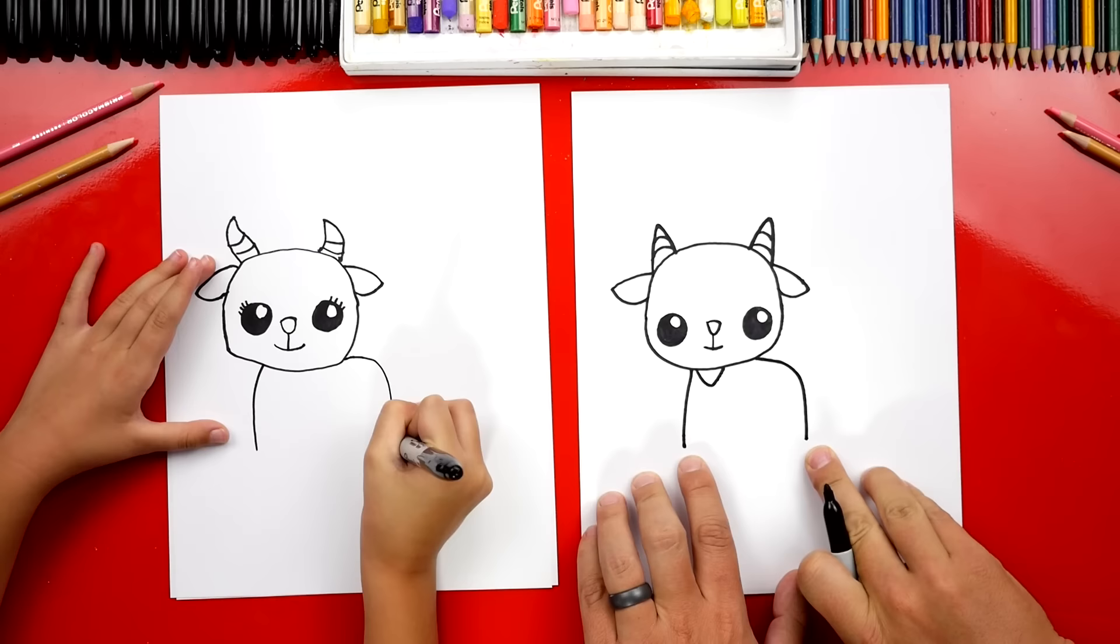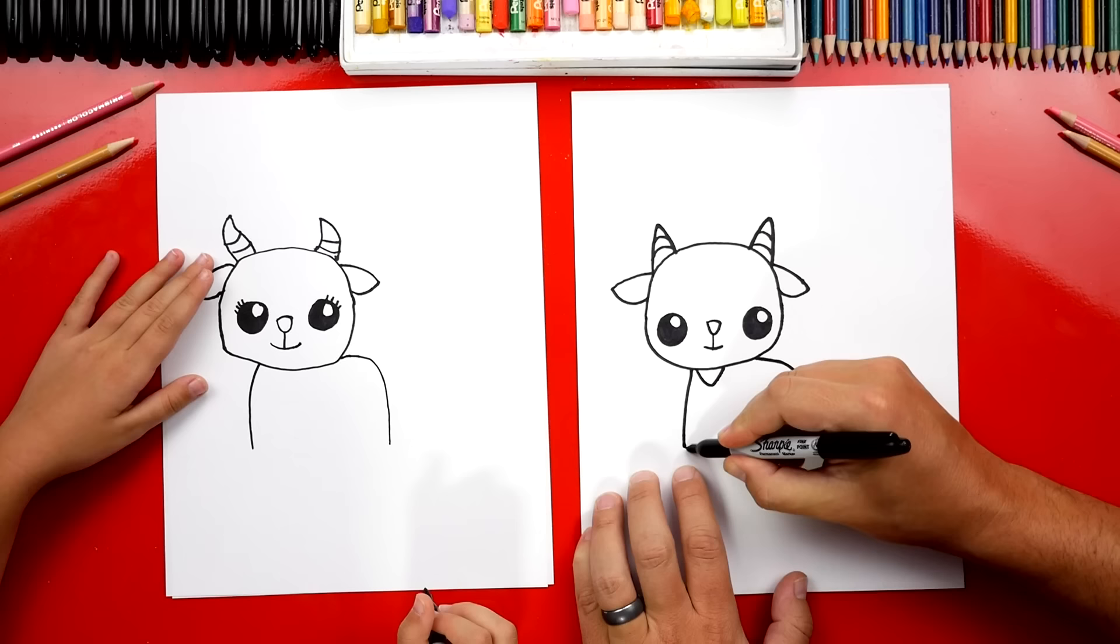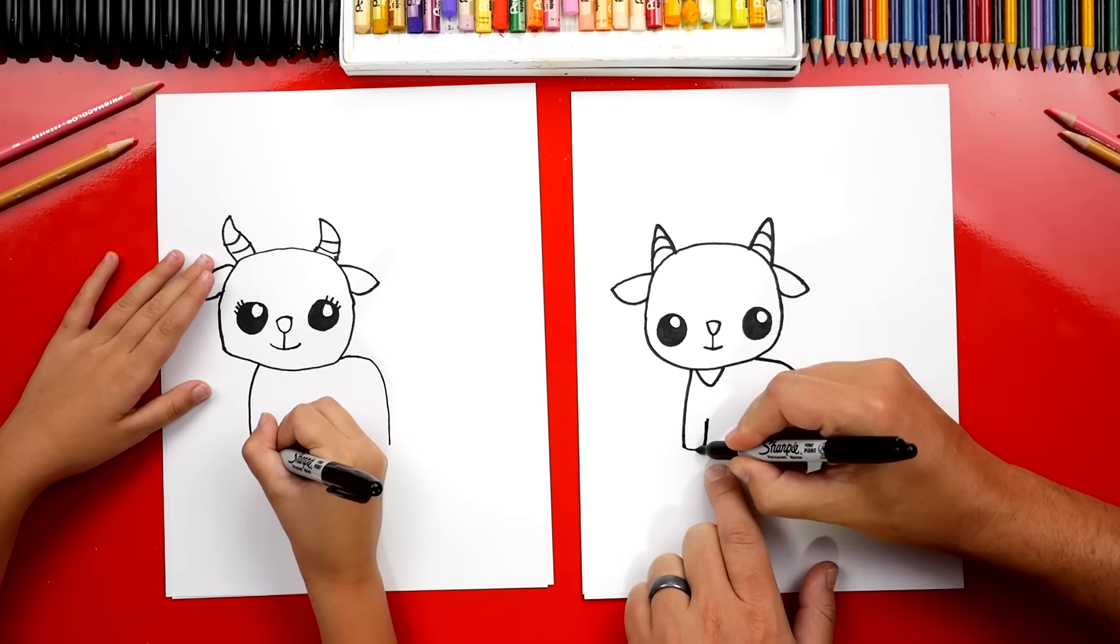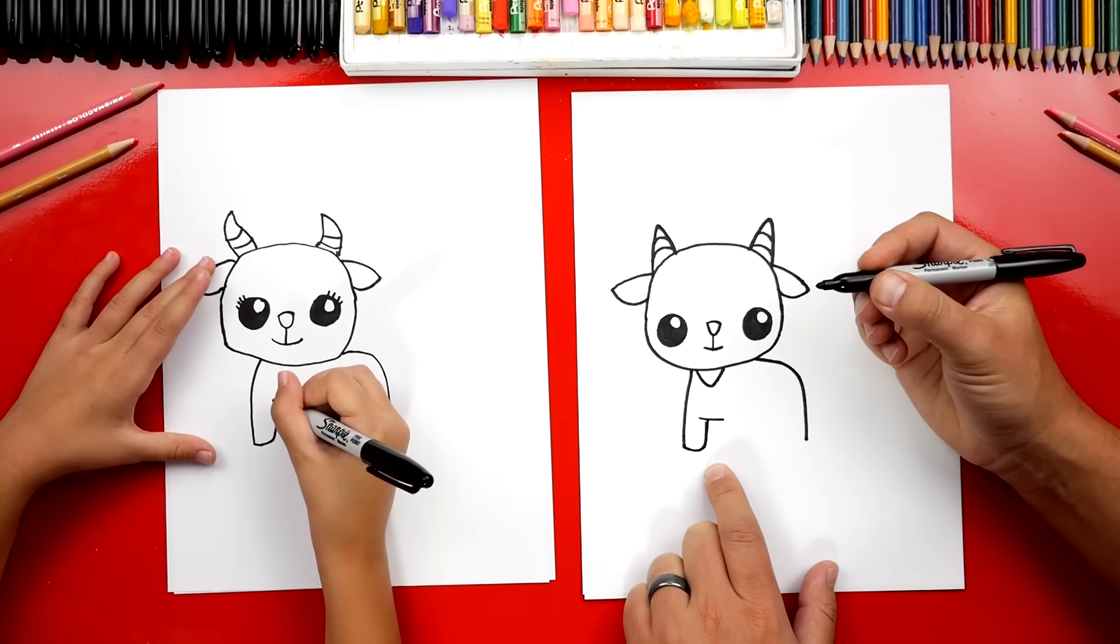Now let's draw his front legs first. We're gonna draw a curve that comes up like this and we're not gonna go all the way. We're just gonna go part of the way. Then we're gonna draw a line at the top like this and then we're gonna draw another leg right next to it.